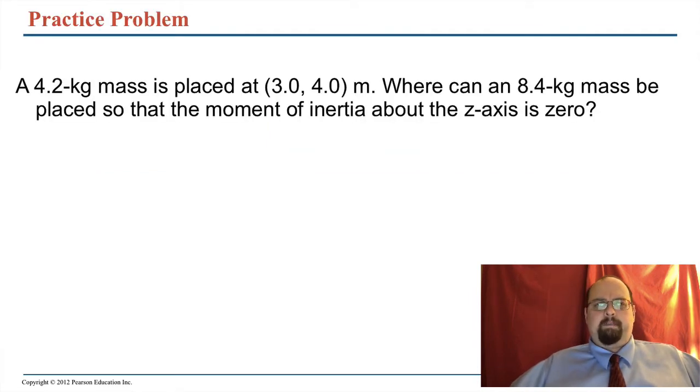So here's a problem for you to solve. You've got a mass, it's got a location, and you want to put another mass so that if you were to spin the whole system around the Z axis, be careful there, that your moment of inertia would be zero. So you want to set up the formula with an X and a Y as a variable, as the XY coordinates of the thing, and do the sum of MR squared for two particles. So it'll be a two-part sum.